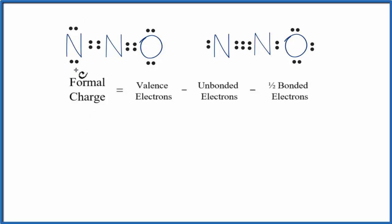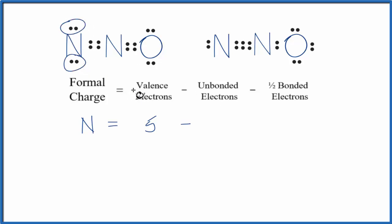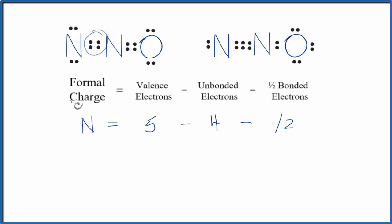We have this nitrogen here with a double bond. Nitrogen is in group 15, sometimes called 5A on the periodic table, so it has five valence electrons. We'll subtract the unbonded electrons — those lone pairs not involved in chemical bonds — we have four of those. Then we subtract one half of the bonded valence electrons, the electrons involved in the chemical bond between the atoms. We have four of those. Five minus four is one, minus two, that equals negative one. So that's the formal charge on this nitrogen.